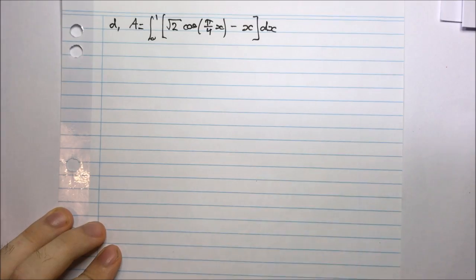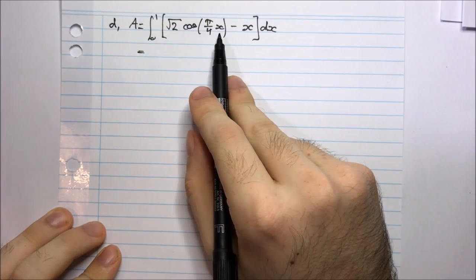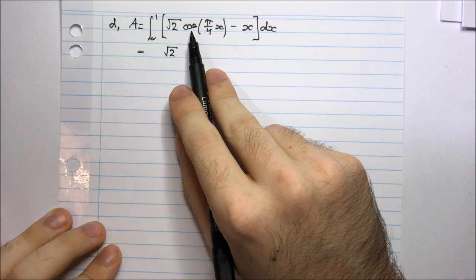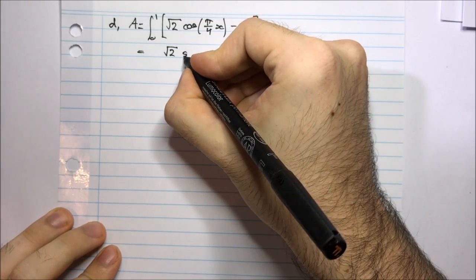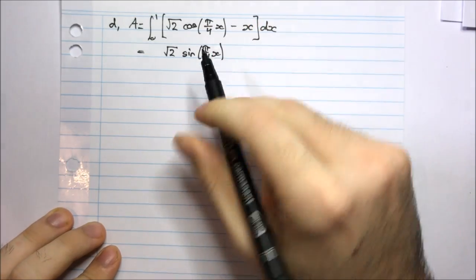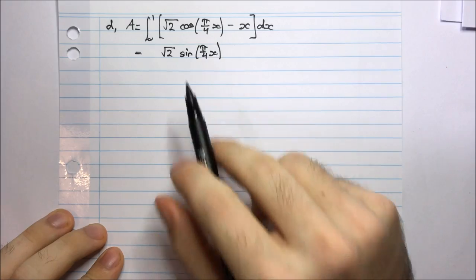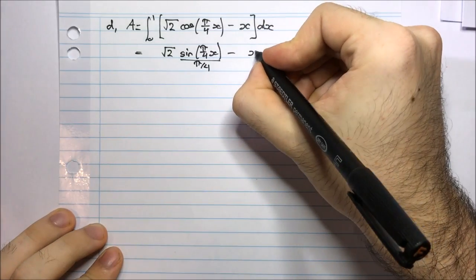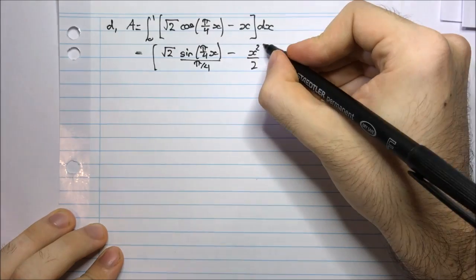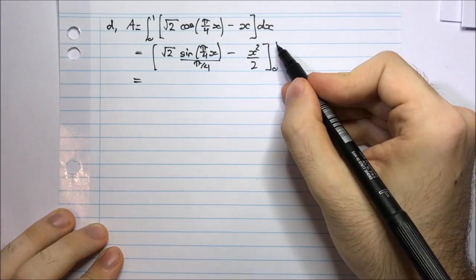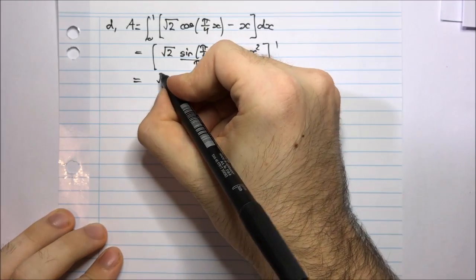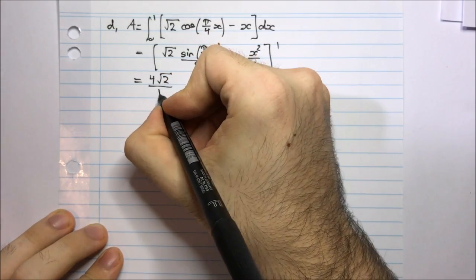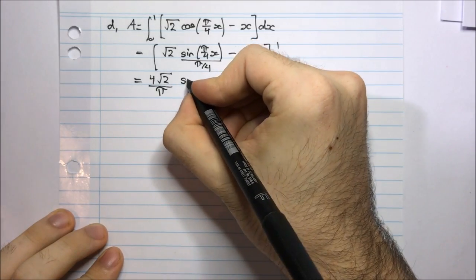Now I just have to compute this. The integral of root 2 cos(π/4 · x) — root 2 is a constant. Integrating cos gives positive sine. So this becomes root 2 times sine(π/4 · x), but I have to divide by the inside derivative π/4. So that means I divide by π/4 — which is like multiplying by 4/π — minus integrating x gives x squared on 2. Evaluated between 0 and 1.